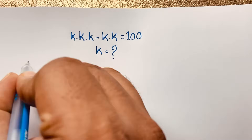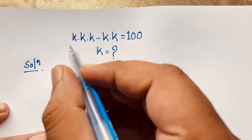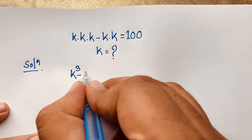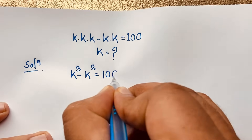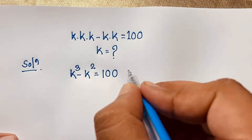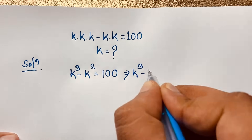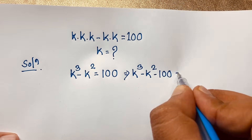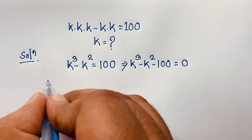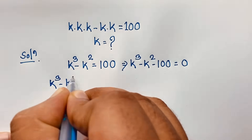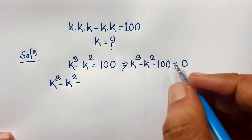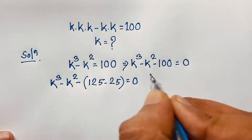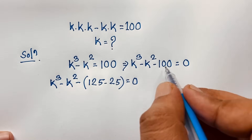So, our math solution: the question k times k times k — I can say it will be k to the power 3 — minus k times k, which is k to the power 2, is equal to 100. Now, k to the power 3 minus k squared, then moving 100 to the other side gives us negative 100 equal to 0. Here, 125 minus 25 equals 100, so this works.